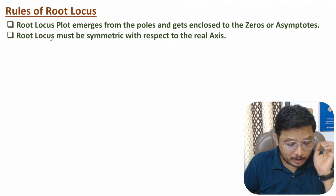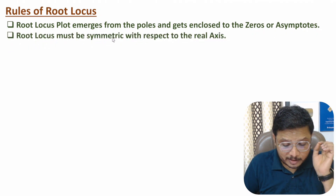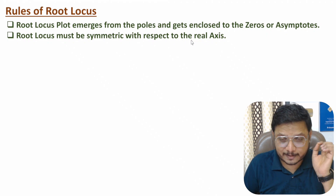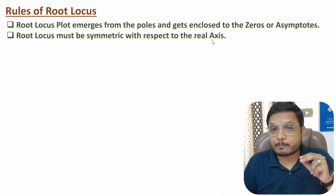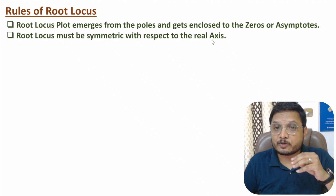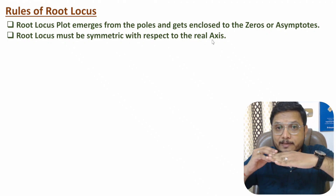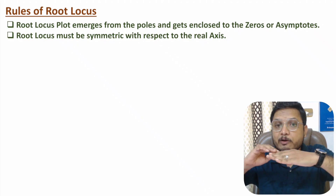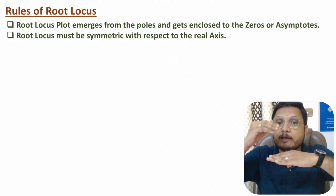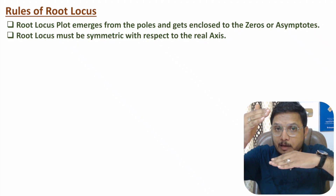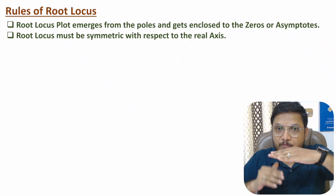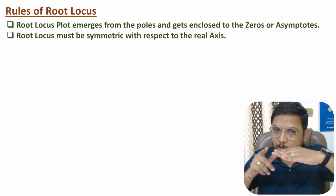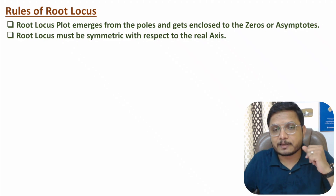The root locus plot must be symmetric with respect to the real axis. This means the plot will be similar on the upper region and the lower region with respect to the real axis.